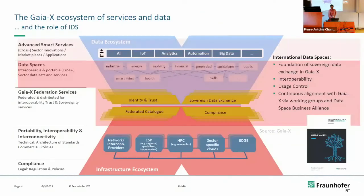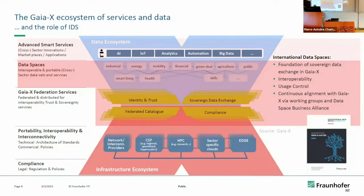This is the high-level figure of the GaiaX architecture — that explains the whole scope. In the lower half of the X there is infrastructure, such as storage in clouds and networking infrastructure. At the top there are data ecosystems with intelligent services and AI.